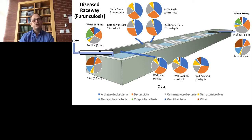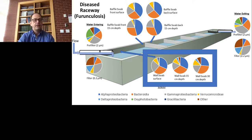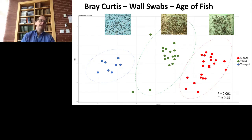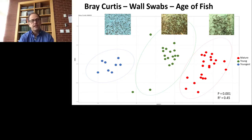We are now interested in how the microbial community in these biofilms on the surface walls changes as the fish in these raceways age. We collected a series of wall swabs from raceways containing very young fish and also older fish, and we depict these data on an NMDS plot. On NMDS plots, each dot represents a microbial community — when two dots are close together, the communities are very similar, and when far apart, they are very different from each other, using the Bray-Curtis distance matrix measure.